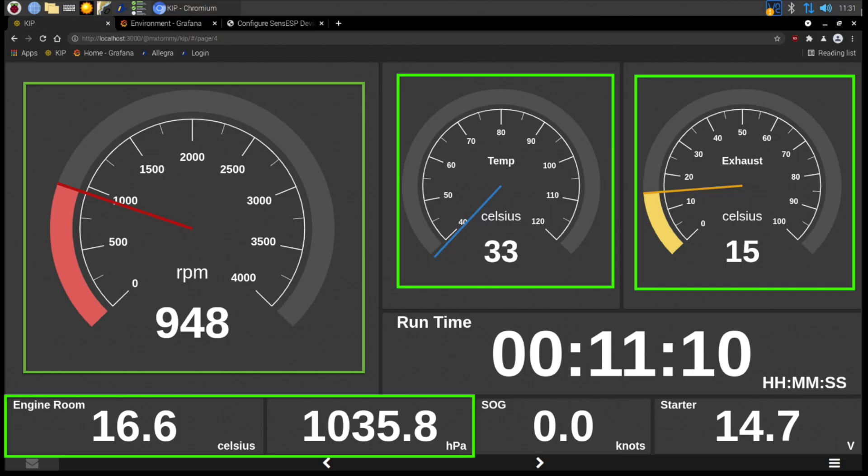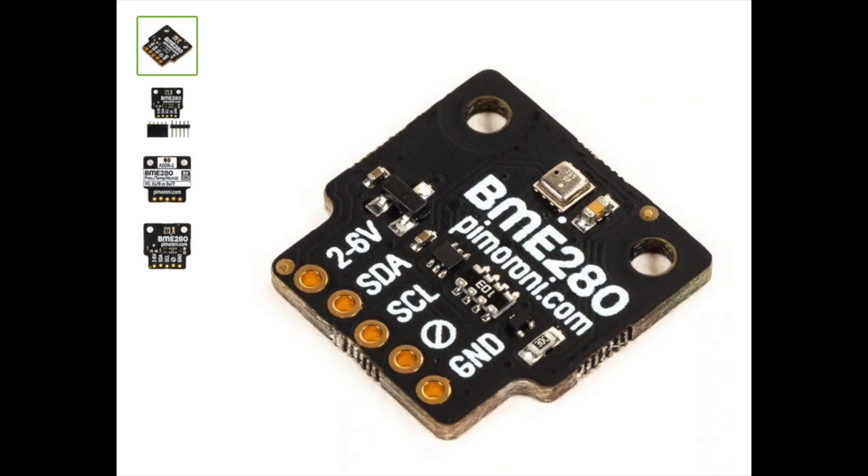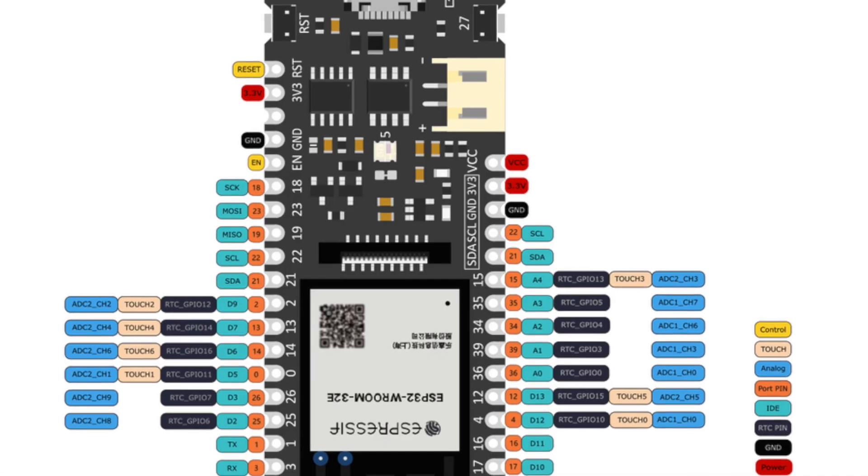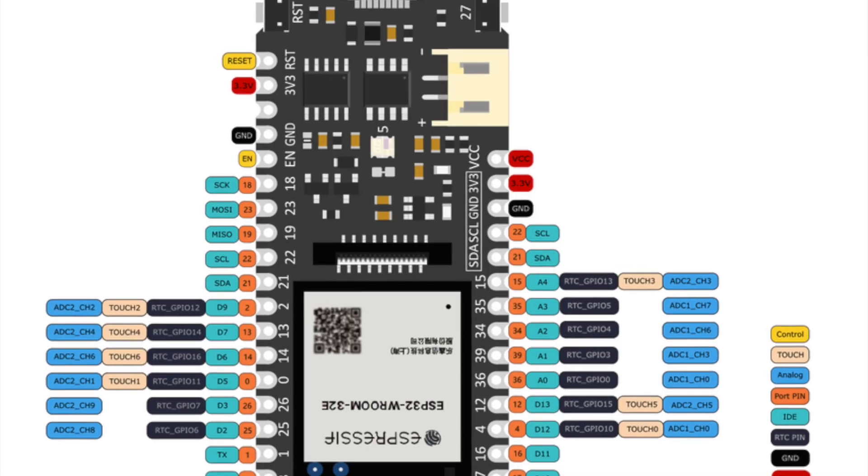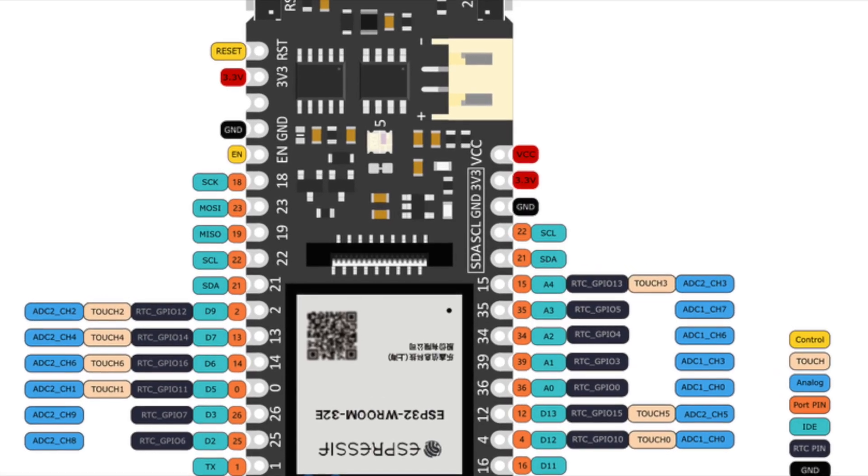And finally, engine room temperature and pressure. Again this is an off the shelf sensor so you just need to power it and provide an SDA and an SCL output - so one data and one clock - and you'll see the corresponding pins for that on the ESP32. Basically plug and play.